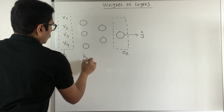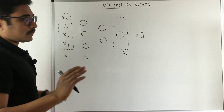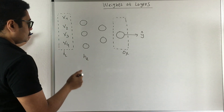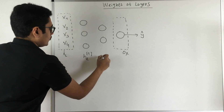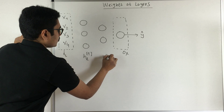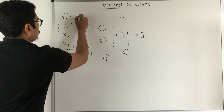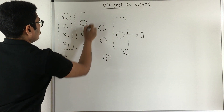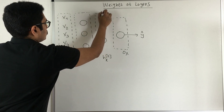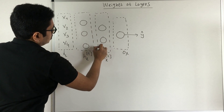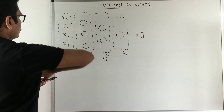Since I have two different hidden layers, I need to be very precise whenever I do the computation. So I represent the first hidden layer as HL superscript [1] and the second hidden layer as HL superscript [2], using square bracket notation to indicate the layer number.